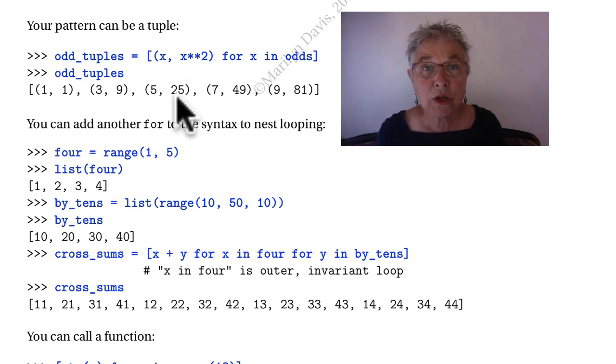You can nest for loops in your list comprehension. Here we have one sequence range from one through four and we'll call it four.